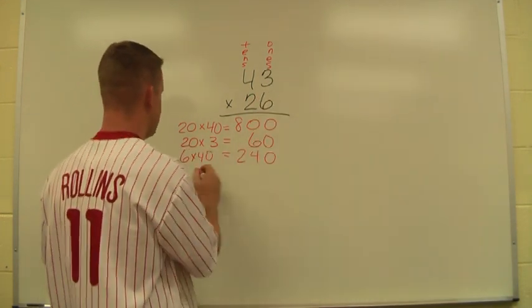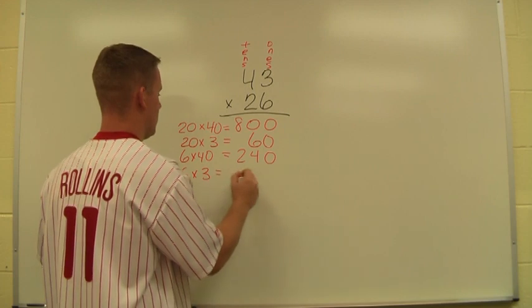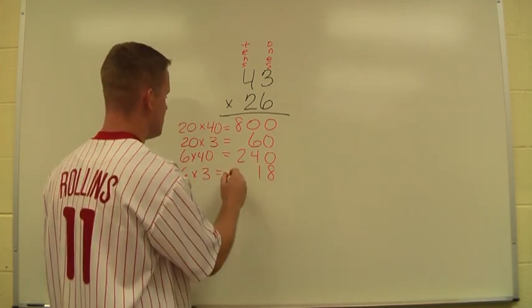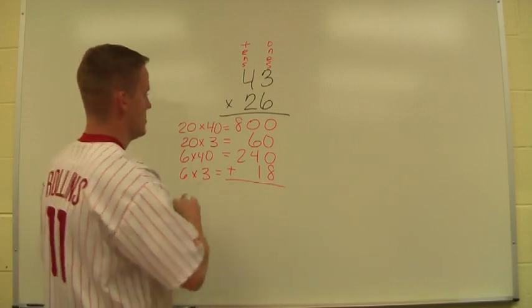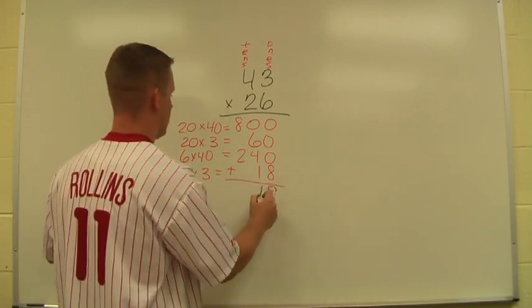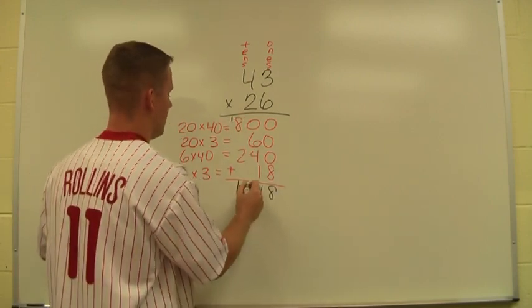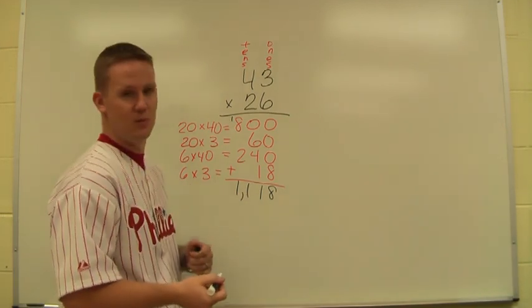And then finally I have 6 times 3. As long as everything's lined up, all I have to do now is add everything back together. So I get an 8, 1, and an 11. So 1,118 would be my answer.